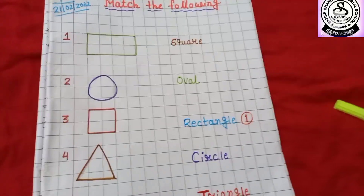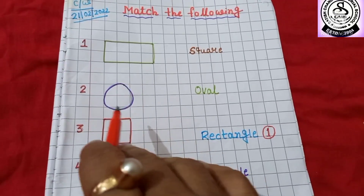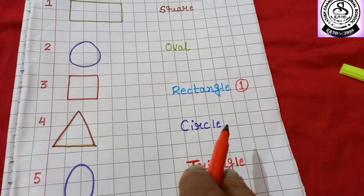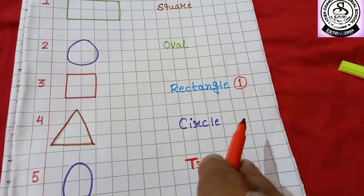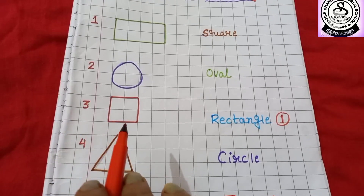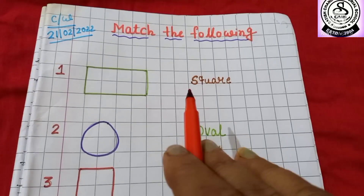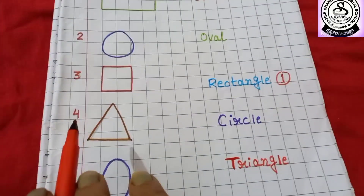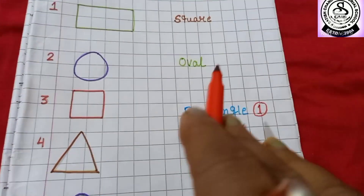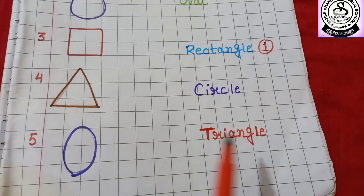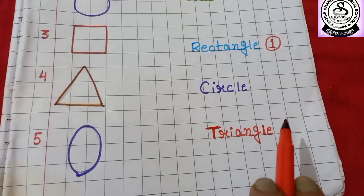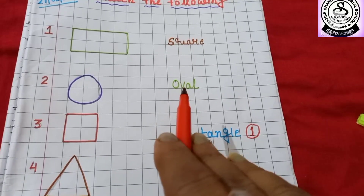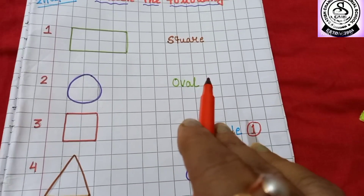Then I have drawn a circle. So where I have written circle you have to search it. Here — C-I-R-C-L-E, circle — that means here you have to write number 2. Then I have drawn a square. Here I have written square — S-Q-U-A-R-E, square — that means here you have to write number 3. Then number 4, I have drawn a triangle. T-R-I-A-N-G-L-E, triangle — so here you have to write number 4. Then number 5, oval — O-V-A-L, oval — and beside the oval you have to write number 5.